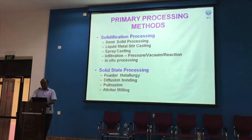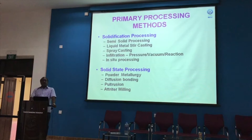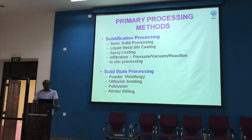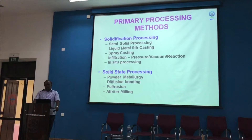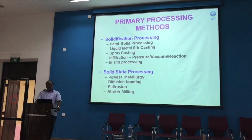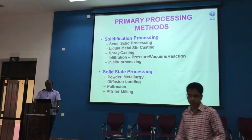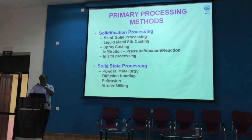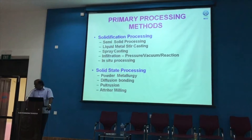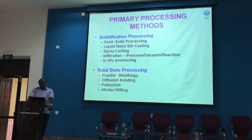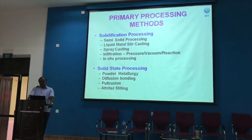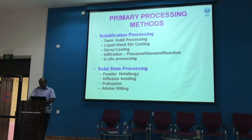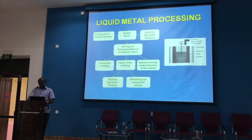The primary processing techniques used for making composites are of two kinds: solidification processing and solid state processing. Solidification processing includes techniques like semi-solid liquid equipment processing, spray casting, and infiltration. Solid state processing includes powder metallurgy, diffusion bonding, and pulsation techniques.